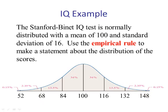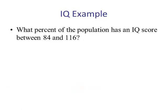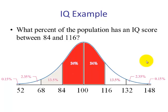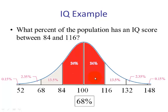What percent of the population has an IQ score between 84 and 116? It's always a good idea to draw the picture. It turns out 84 and 116 are one standard deviation below and one above the mean. So by the empirical rule, this is 68%. That's our answer.